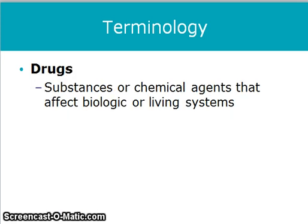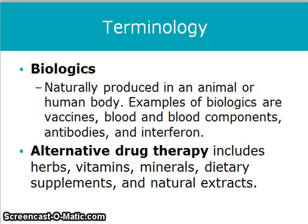Drugs are defined as substances or chemical agents that affect biologic or living systems. Biologics means naturally produced in an animal or human body. Examples of biologics are vaccines, blood and blood components, antibodies, and interferon. Alternative drug therapy includes herbs, vitamins, minerals, dietary supplements, and natural extracts.